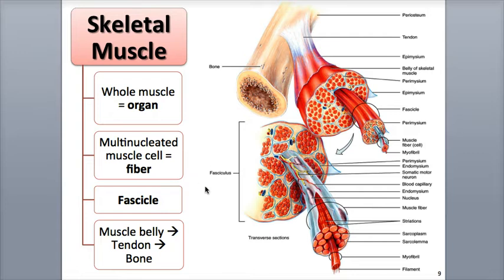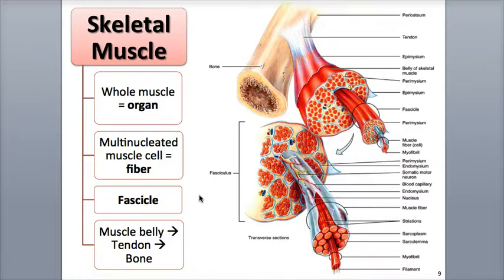The term cell and fiber are interchangeable when discussing muscular tissue. Many animal cells have a rounded shape, but muscle fibers appear as long, thin strands, hence the name fiber. They are also multinucleated, which means they have multiple nuclei inside their cells, as opposed to most cells having only one single nucleus. Longer cells often require additional nuclei to maintain the needs of the cell.